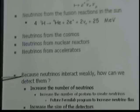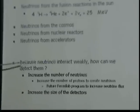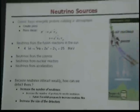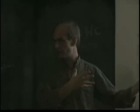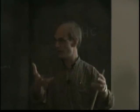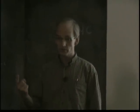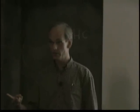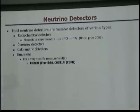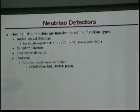Because neutrinos interact very weakly, how do we detect them? There are only two ways. One is we increase the flux of neutrinos — that's why we make neutrinos ourselves at an accelerator through the decay of particles. The other way is by increasing the size of the detectors. Neutrino detectors are generally humongous, and they come in all kinds of flavors. I will only discuss the Cherenkov detectors.